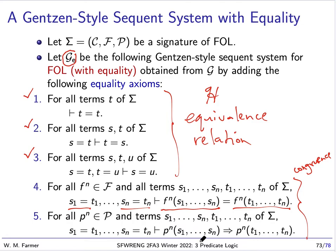And the axiom for predicate applications is similar. If we have a predicate application and we change its arguments to other arguments that are equal to the original arguments, that's what this says, then that will imply the result of applying this predicate to those new arguments.